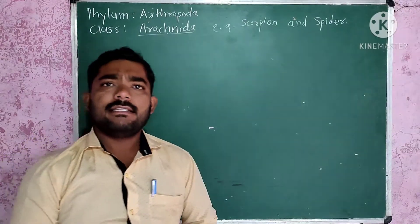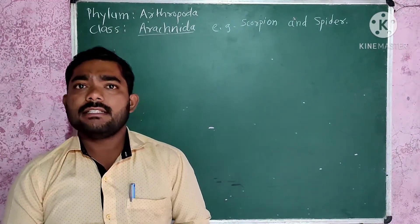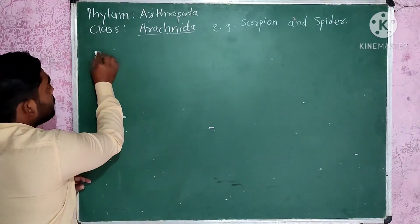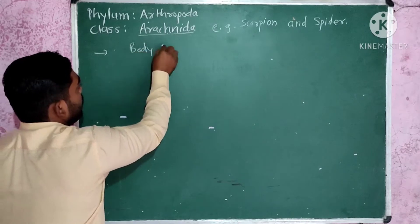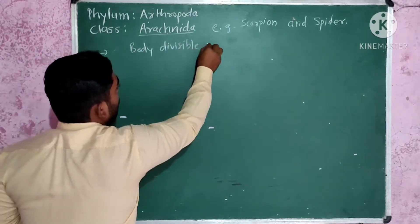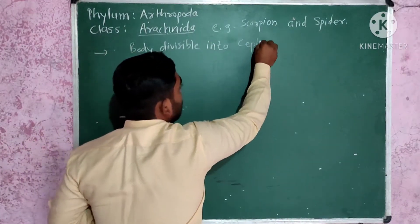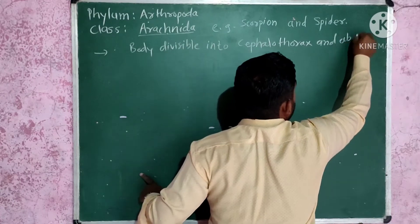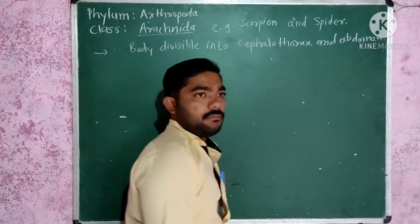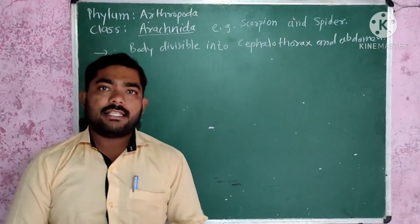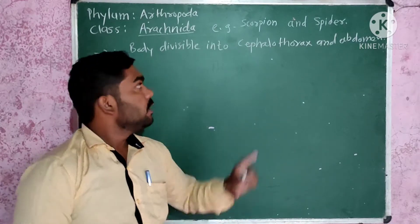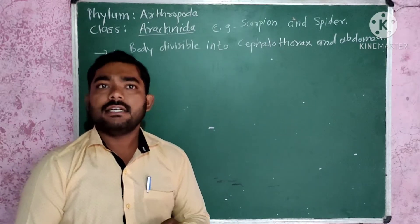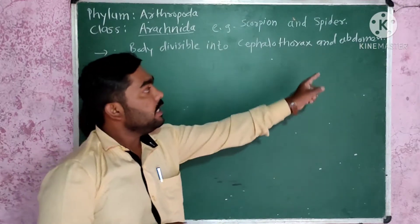The general characteristics of this class: organisms have their body divisible into two main structures, which is the cephalothorax and abdomen. These organisms are mostly terrestrial and they show this two-part separation in the body. The cephalothorax is the union of the thorax and head region, and the abdomen.